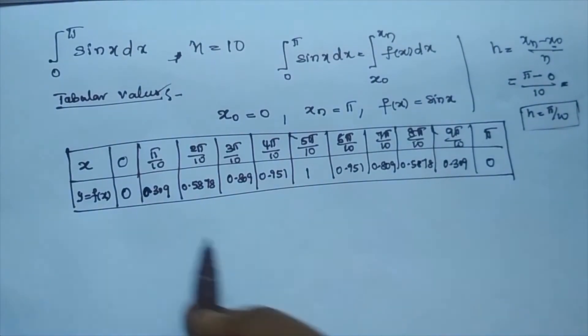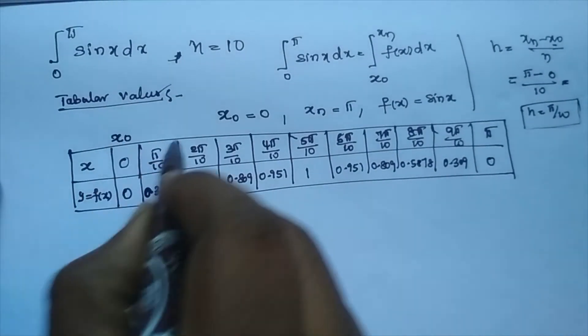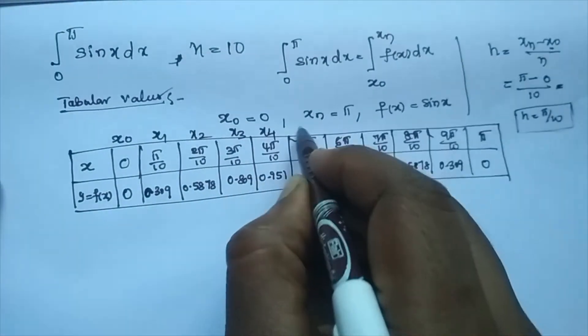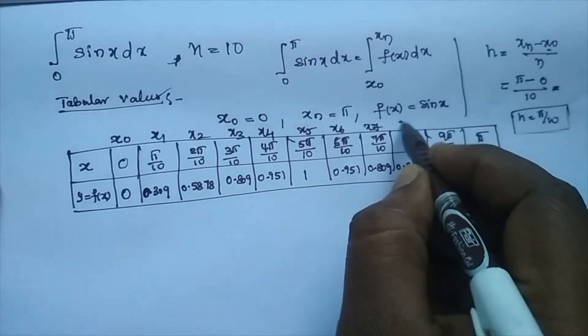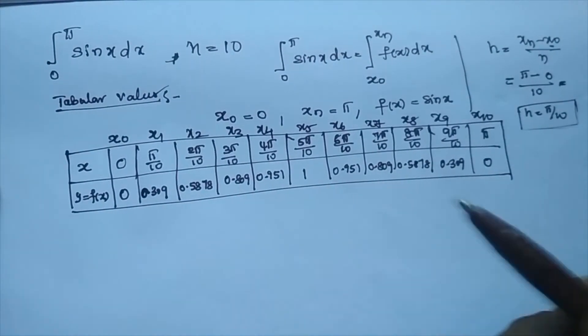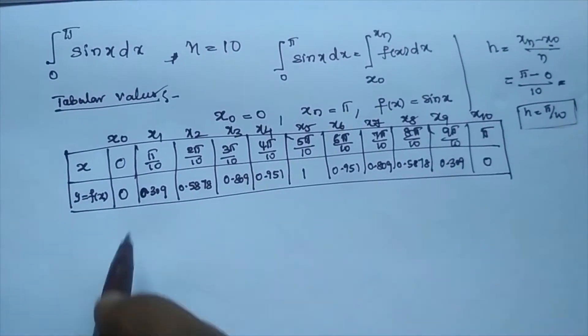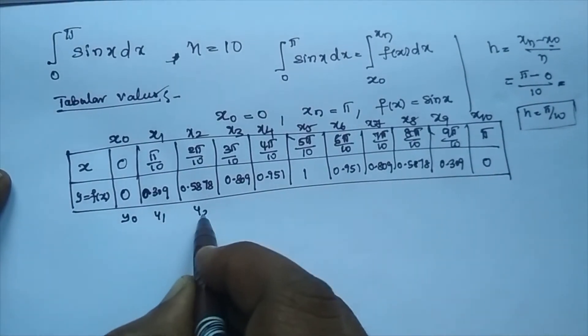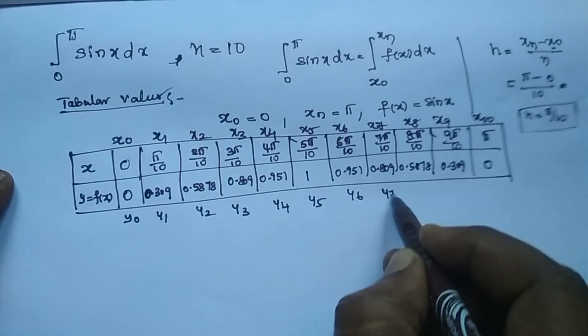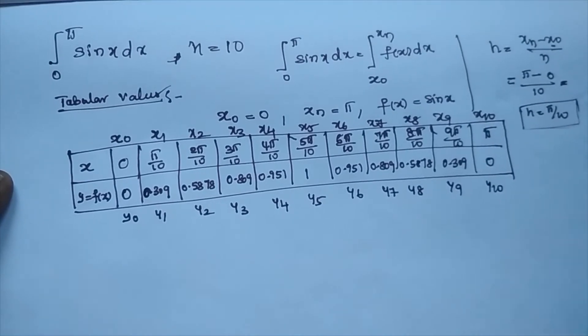So after getting this tabular value, we should identify the x observations like this is the starting one x0, x1, x2, x3, x4, x5, x6, x7, x8, x9, and x10. We are getting n plus 1 observations. n is actually 10, we get 11 observations. Corresponding y values: y0, y1, y2, y3, y4, y5, y6, y7, y8, y9, and y10.